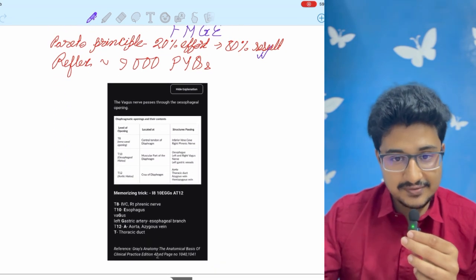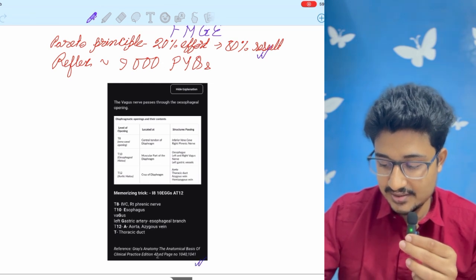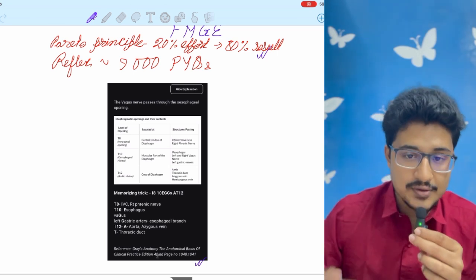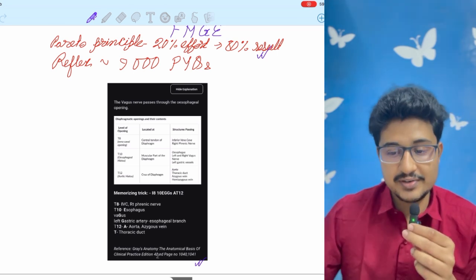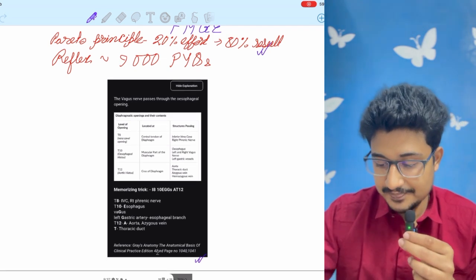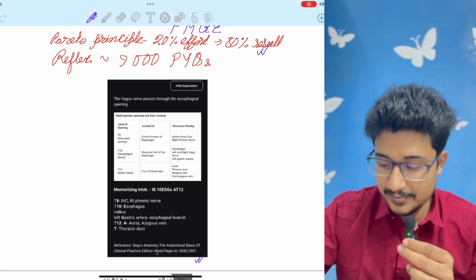Why I am saying Reflex? Because if you see the explanations, you would get many audio solutions by Dr. Aditya Gupta himself. I was the final reviewer of most of the modules of Reflex, and I have added many memorizing tips and tricks, like which structures pass through diaphragm you remember by I-8-10-X at 12. In T8, you get the IVC and the right phrenic nerve. T10, you get X, that is esophagus, vagus and left gastric artery. At 12, that is in T12 level, you get the aorta and the thoracic duct. Like this many mnemonics, I have added for easy memorization.